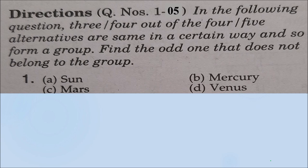The first question is from classification. You can see four options: Sun, Mercury, Mars, and Venus. Among these four options, one will be unique — one whose characteristics are different from all others. Mercury, Venus, and Mars are all planets, and Sun is not a planet. So your answer will be option A, that is Sun.